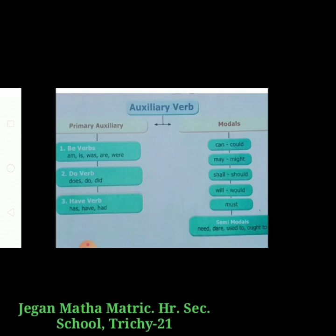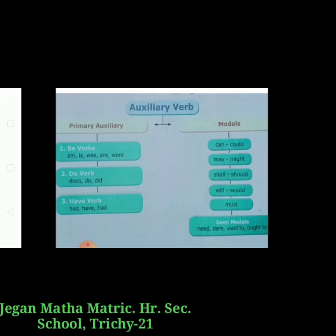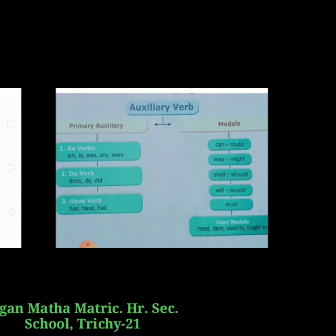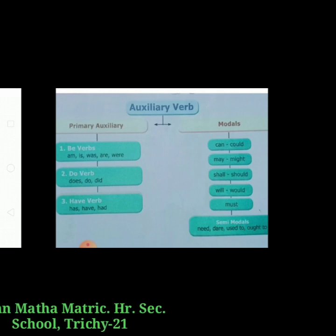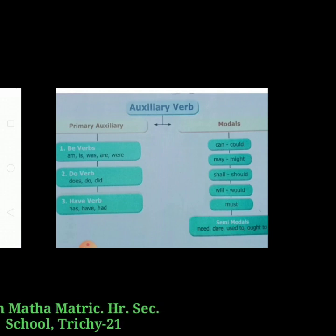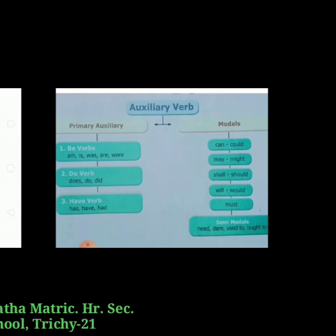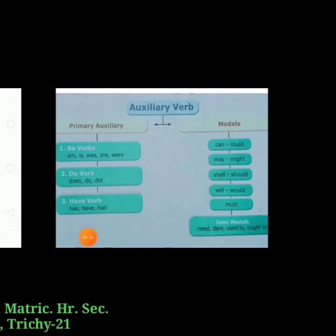So, auxiliary verbs are divided into primary auxiliary and modals. Primary auxiliary verbs are: be verbs, do verb, and have verb. The next type is modals.